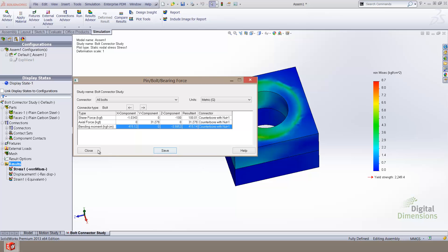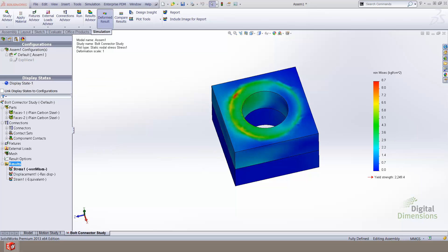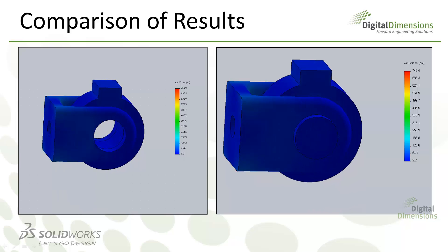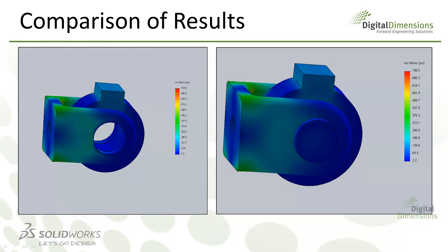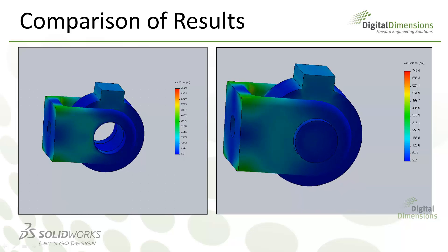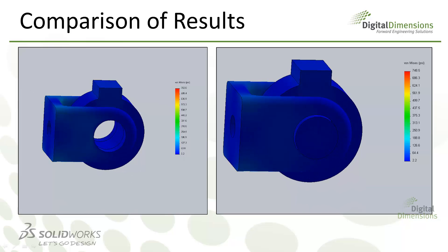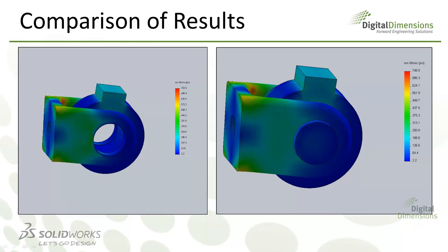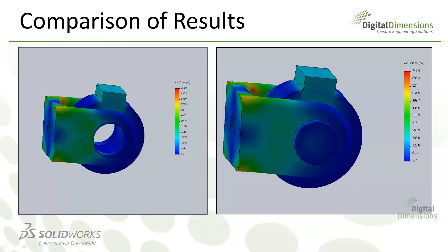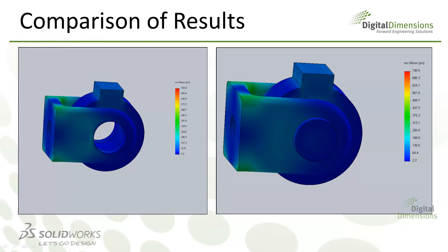Now that we've seen the results for pin, bolt, and bearing forces, let's take a look at the difference in results on 3D models. This slide shows two models. The one on the left is utilizing a bolt connector to hold the model together, and the one on the right is utilizing a 3D model of a bolt. Notice the results on the left simulation are 760 PSI max, and the results on the right simulation are 748 PSI max. The variation of these results is negligible.